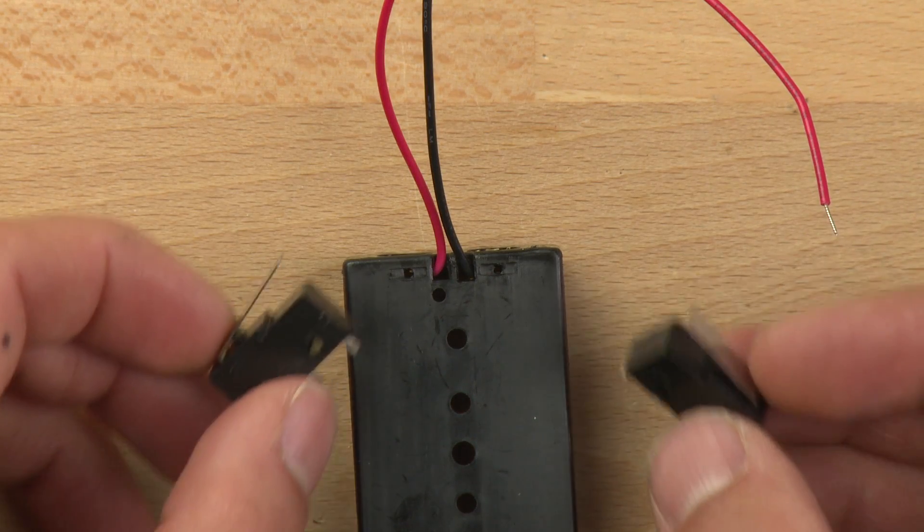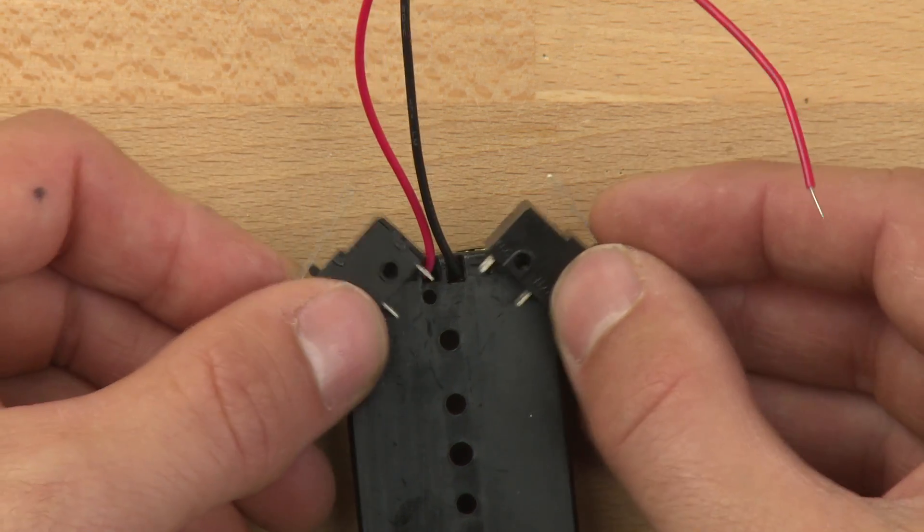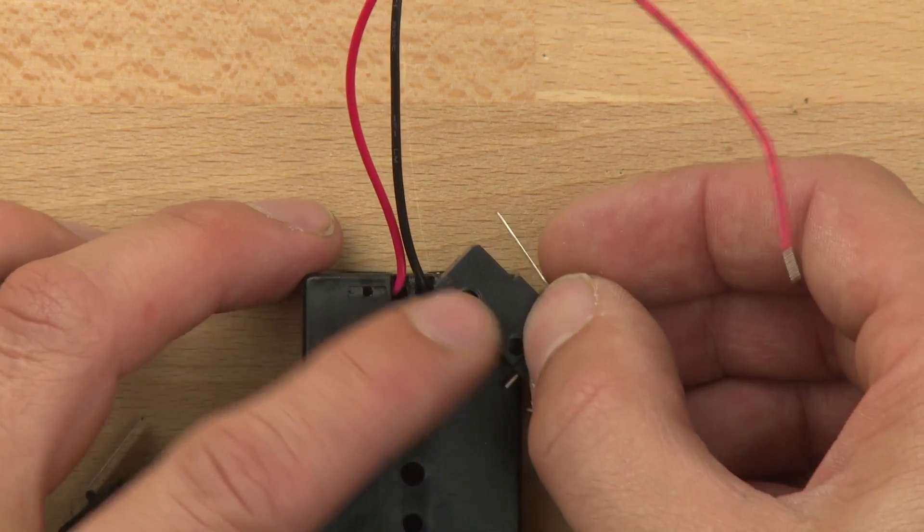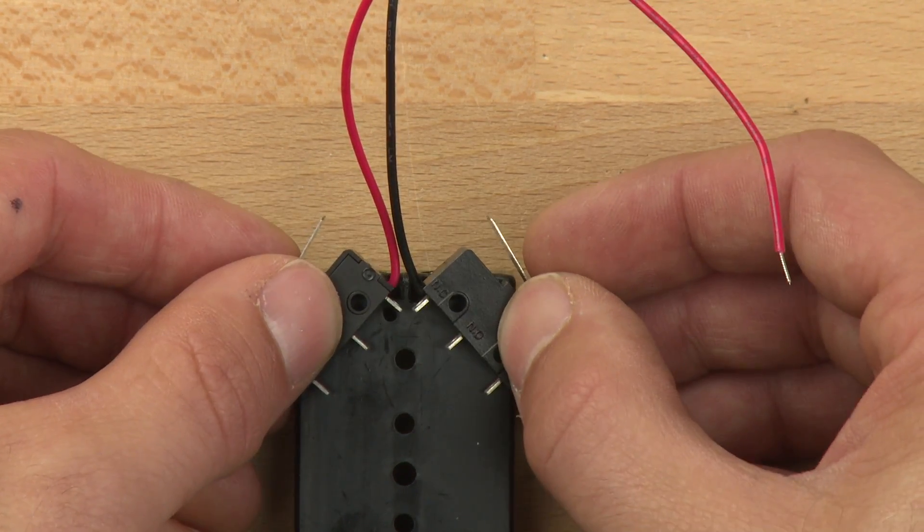Okay, so let's go ahead and put our single pole double throw lever switches on our bot. Now we want to make sure that we attach these at the ends and that we put them so that they sort of stick off the edge and they're at about a 45 degree angle, like that.